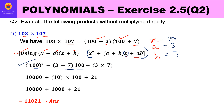Simplifying: 100² = 10,000; 3 + 7 = 10, so 10 × 100 = 1,000; and 3 × 7 = 21. Therefore 10,000 + 1,000 + 21 = 11,021. That is the product. Using Identity 5, we found the product of 103 and 107 without multiplying them directly.